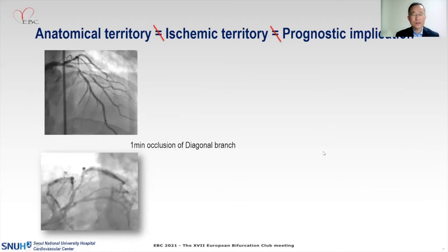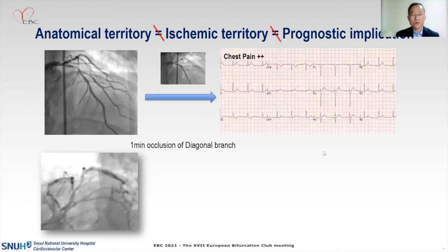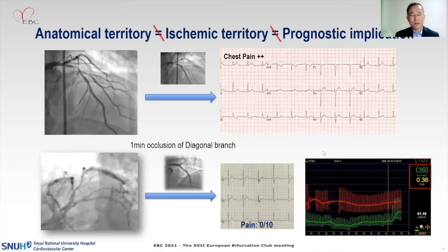From angiographic testing, you can also see the discordance among these three elements. Here are two big diagonal branches which were functionally significant. When each branch was isolatedly occluded for one minute with a balloon, the responses were different. In the upper case, occlusion caused severe chest pain and ST segment elevation on 12-lead ECG. However, in the lower case, the patient did not complain of chest pain and there was no ECG change, because the patient's collateral recruitability was quite high, with a wedge pressure of 39 mmHg.